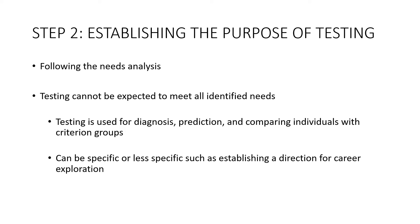Testing cannot be expected to meet all identified needs. Testing is used for diagnosis, prediction, and comparing individuals with criterion groups. When you do an assessment, the results help us understand if there is some sort of diagnosis needed, or to predict — for example, an SAT score is supposed to help predict whether a college student is going to graduate college — and of course comparing individuals with a criterion group, like how your score compares to a thousand students who took the same exam.